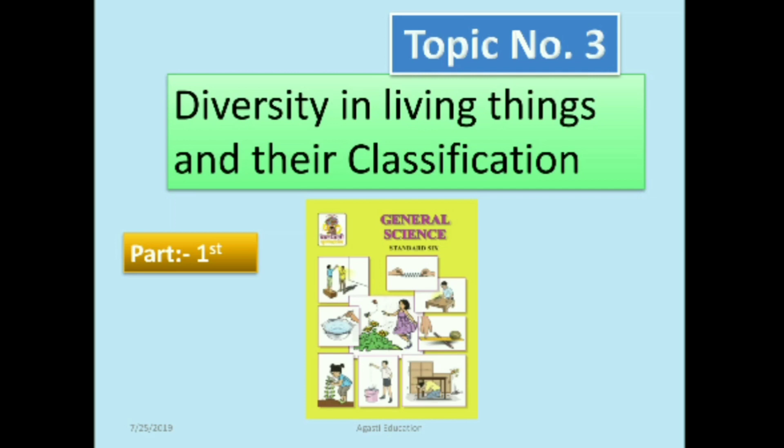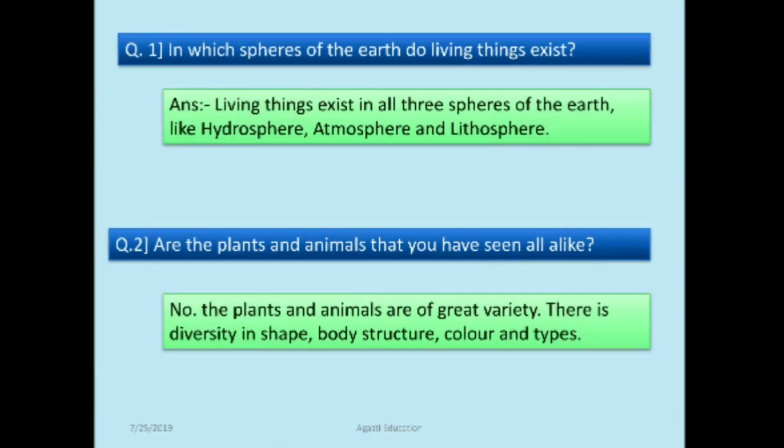Hi friends, today's topic is diversity in living things and their classification — topic number three, general science, standard six. Today we are going to learn part one. Before that, let's recall: question number one — in which spheres of the earth do living things exist?